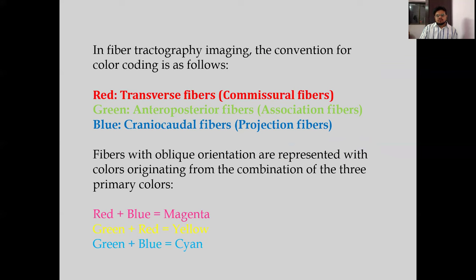Commissural fibers which run transversely appear red; association fibers running anteroposteriorly are green; projection fibers which run craniocaudally are blue. Fibers that have an oblique orientation are represented with colors originating from a combination of the three primary colors: red and blue form magenta, green and red form yellow, and green and blue form cyan.